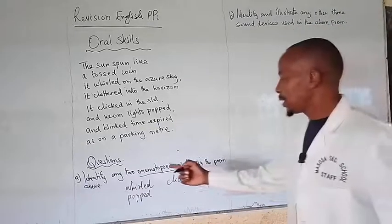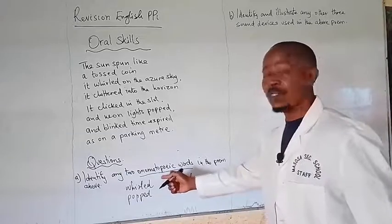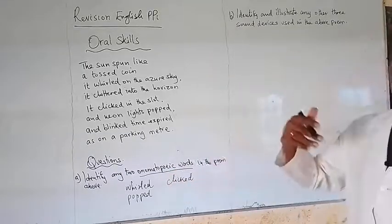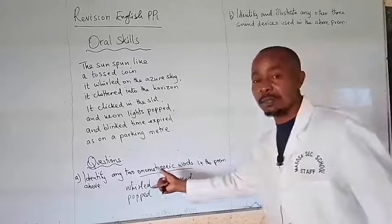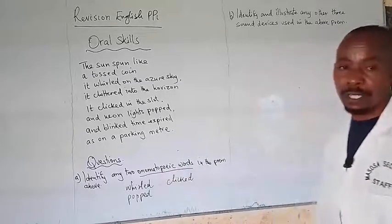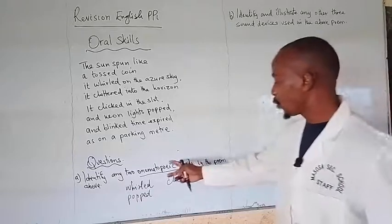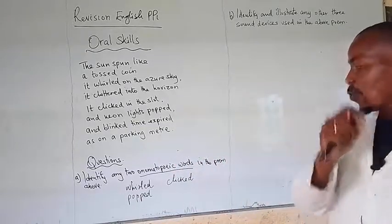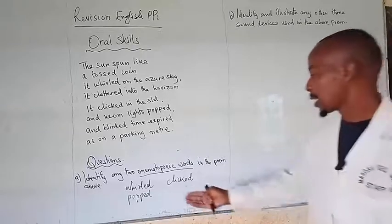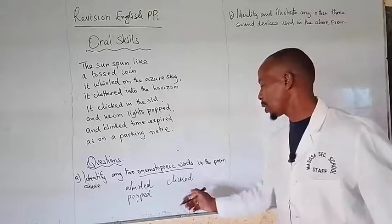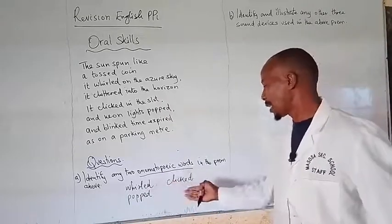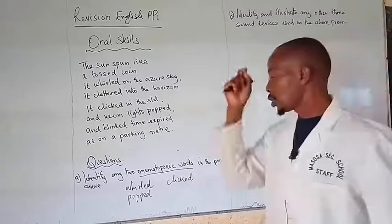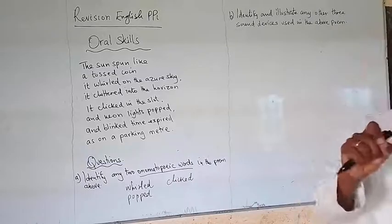And maybe on the flip side of this, onomatopoeia has another word which is the counterpart of the same, that is 'idiophone.' And when you're talking about idiophone, there are also descriptive sounds. But with their case, we cannot find them in a dictionary, like in the case of the words that we have in this poem here — whirled, popped, clicked — you can get them in the dictionary. Whereas when we are talking about idiophones, we'll never get them in the dictionary.